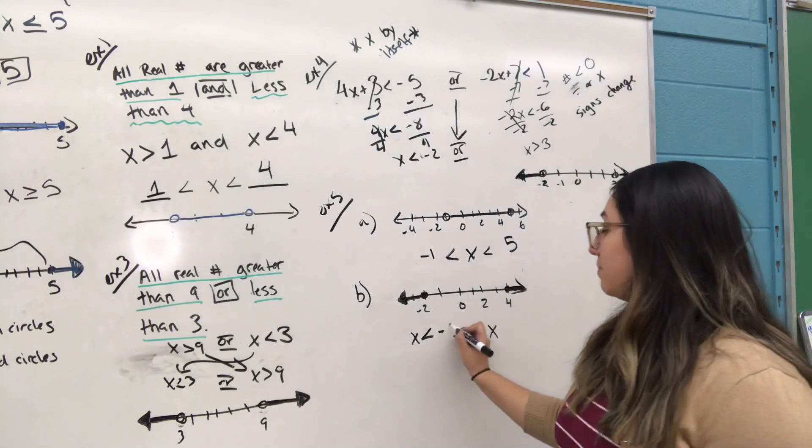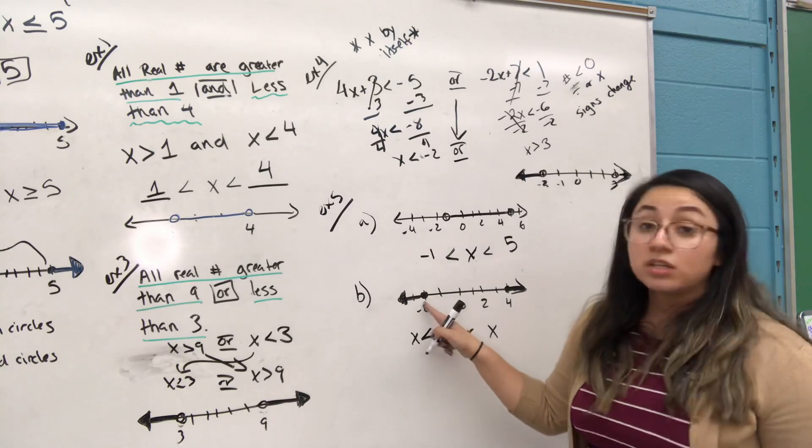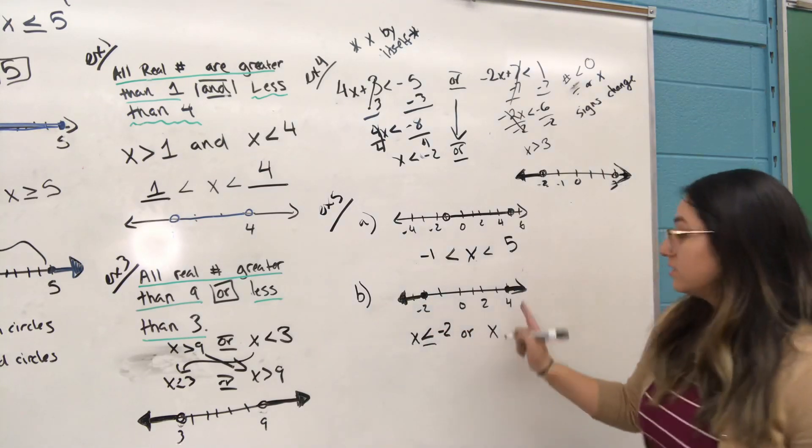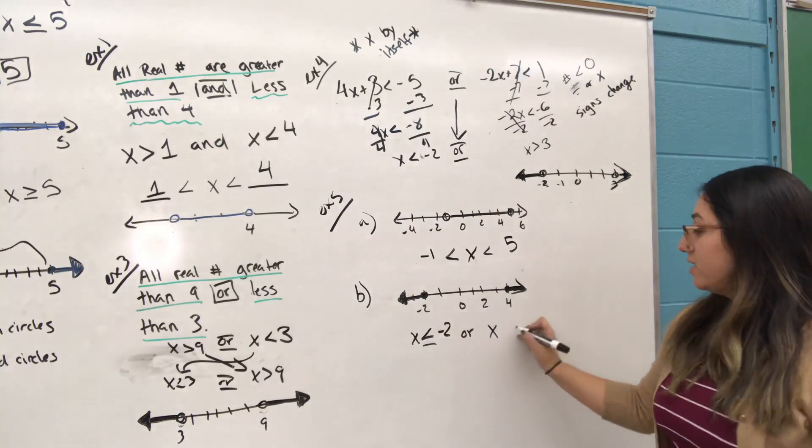So you have arrow facing that way. I have my less than. Again, I have that point, which is negative two. It's a closed interval. So that means line underneath. Or, so that means we have the gap. We have four.